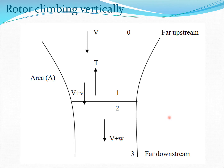Let's now create the flow field for the rotor climbing vertically. You have your rotor here, essentially moving vertically up, so there is now a climb velocity capital V. This air goes through the rotor disk and acquires an extra velocity small v, so through the rotor disk the velocity is capital V plus small v — capital V being the climb velocity and small v being the induced velocity at the rotor disk.